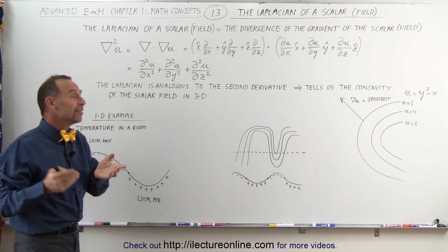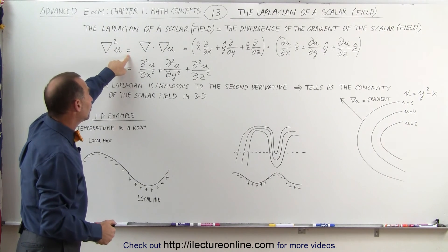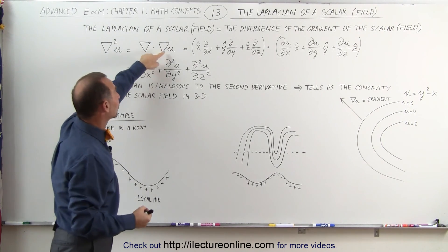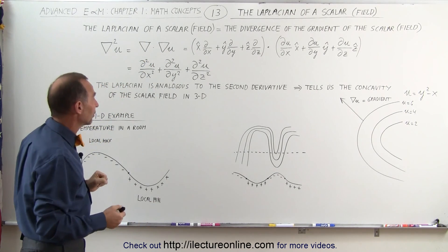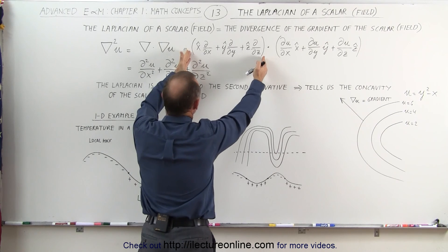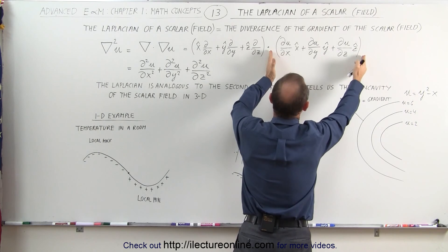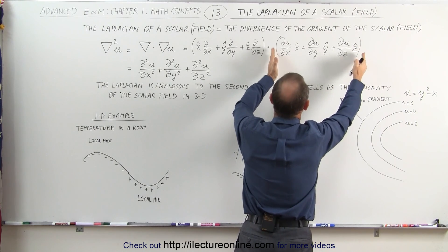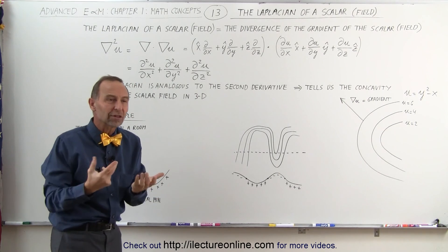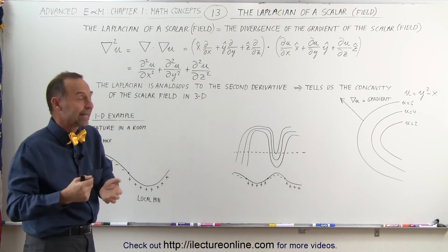Mathematically, it is the del operator squared times the scalar field, which is equal to the del operator multiplied via dot product with the gradient of the scalar field. When we expand that, the del operator is a vector quantity, and we're multiplying it via dot product with the gradient of the scalar field, which is also a vector quantity. When you dot two vectors, you get a scalar — a number that can either be positive or negative.